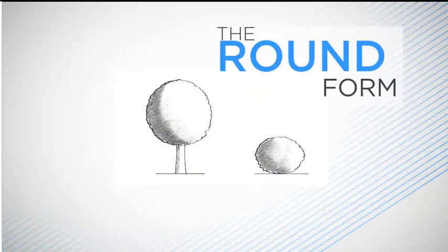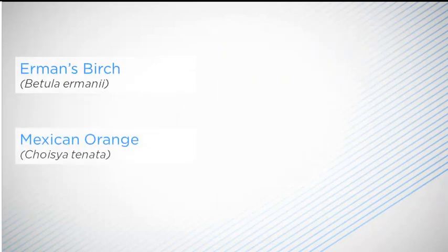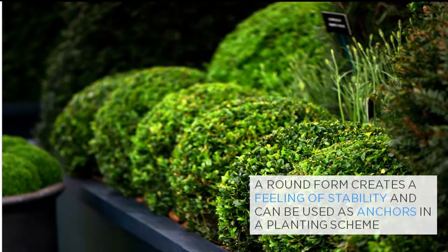The round form tends to be formal, and plants such as box and yew are often clipped into this shape. A loose round does occur naturally in some trees and shrubs, such as Erman's birch, Betula ermanii, or the Mexican orange, Choisya ternata. A round shape creates a feeling of stability, and plants with this form can be used as anchors in a planting scheme. They can also be used as a full stop at the end of a border, and when planted as repeat shapes, they create an undulating rhythm.